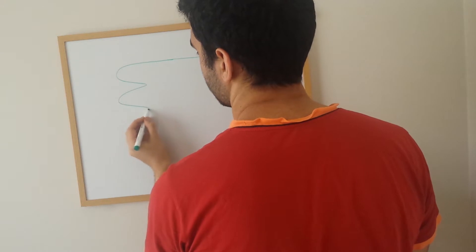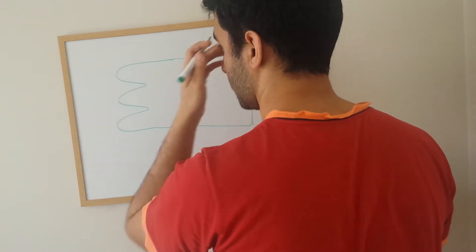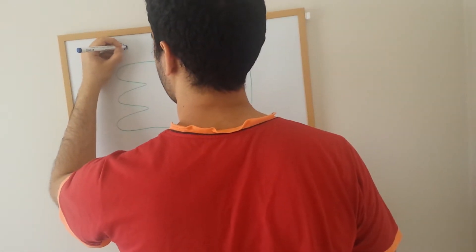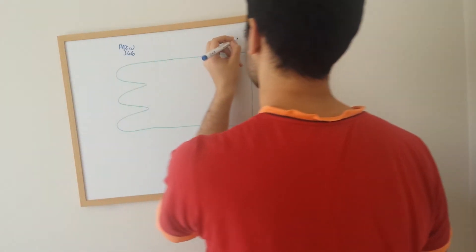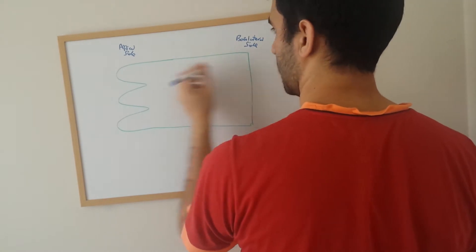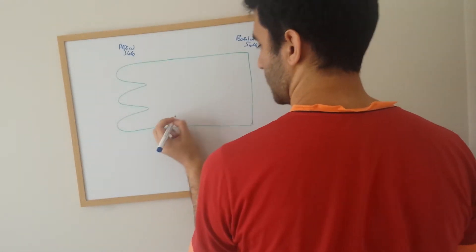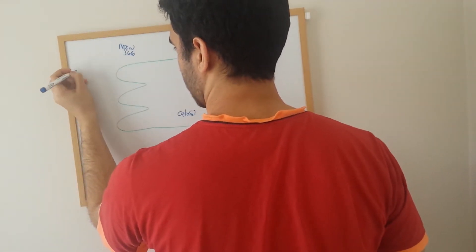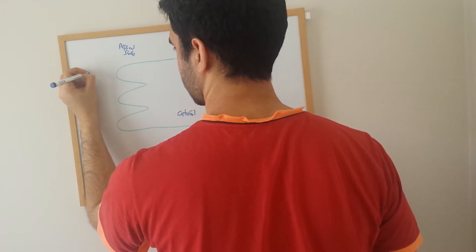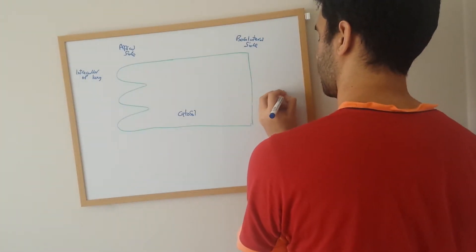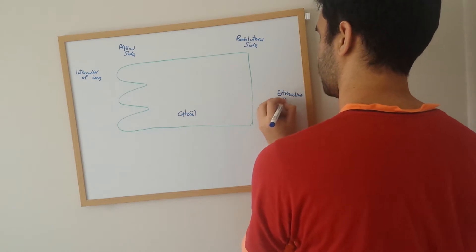So this is the apical side of your lung. This is basolateral. I'm denoting that this is intracellular, this is extracellular, basolateral and apical side. Inside here is the cytosol, this is the intracellular lung cell. This is the extracellular fluid.